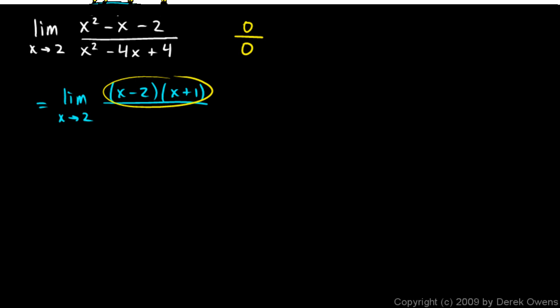And if you don't see that, you can do a FOIL real quick and see that you get that numerator. And then the denominator, x² - 4x + 4, factors as (x - 2)(x - 2).